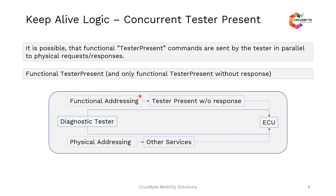Functional addressing is a method where we don't send any specific addressing to each ECU - it's a broadcast of requests. Physical addressing is one-to-one communication. It is possible to send, with the help of functional addressing, the Tester Present to any ECU, followed by any other service. That other service will then execute in parallel to the Tester Present service, and this logic is called the keep alive logic.